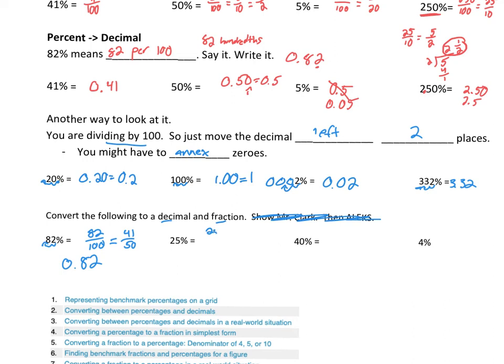Okay, 25 percent is 25 per hundred. We can divide both those by 25. We're dividing into quarters. So it's one-fourth. And as a decimal, 25 hundredths. 40 percent is 40 hundredths. Or four-tenths. Which would give us 40 over 100. Which is the same as four-tenths because we're dividing by 10. And we can simplify that to two-fifths.